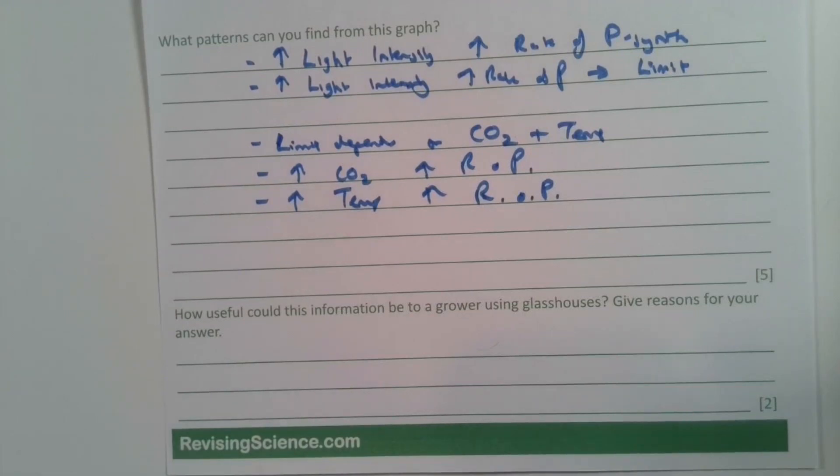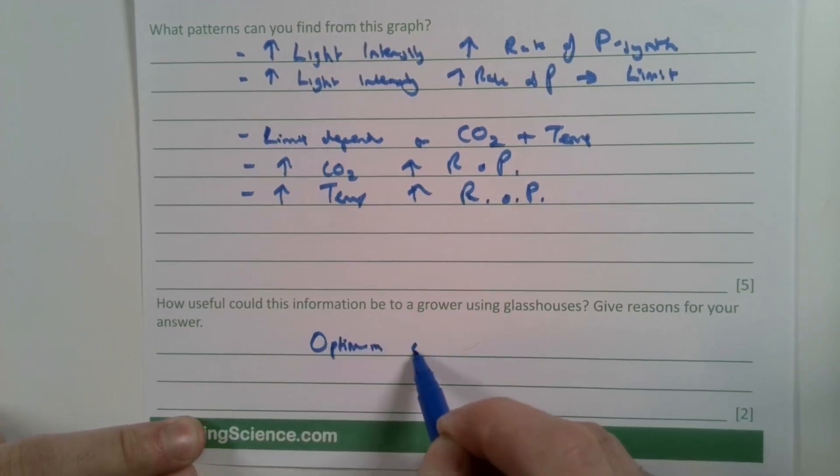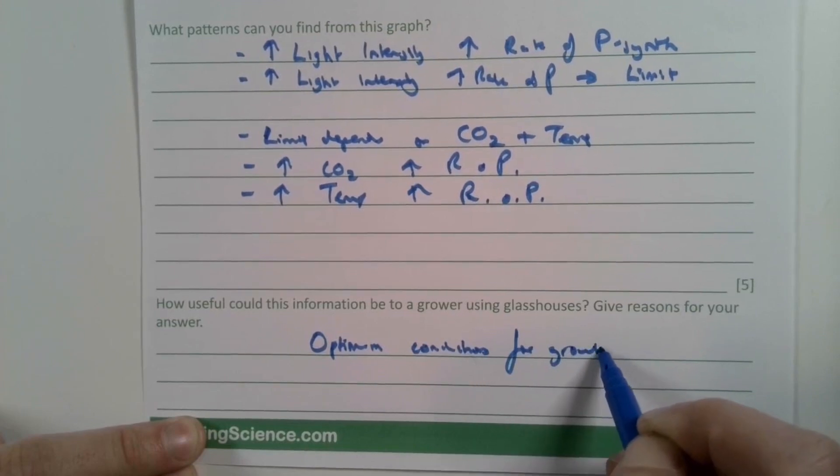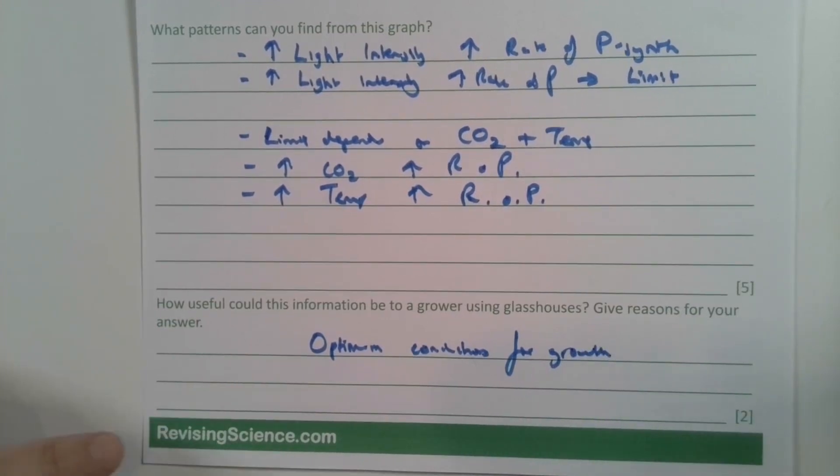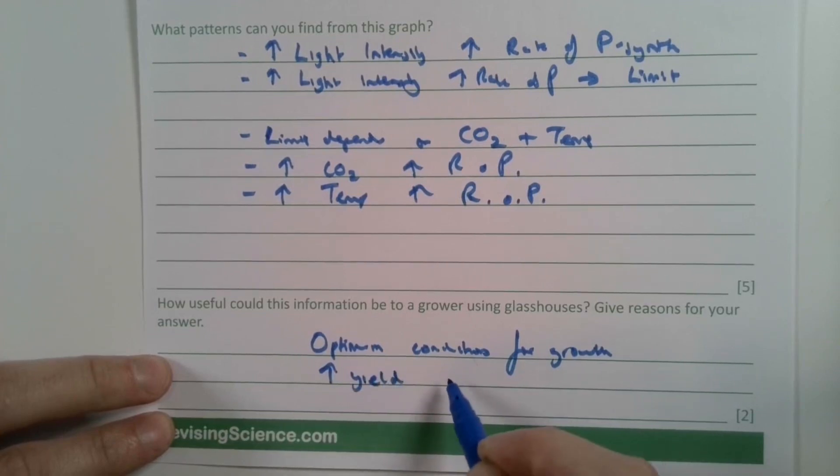In the next question, how useful could this information be to a grower using glasshouses? Give reasons for your answers. Well, it would be very important because it would allow the grower to find out the optimum conditions for growth. By knowing optimum conditions for growth, you'd be able to increase the yield and therefore increase the economic output of the glasshouses.